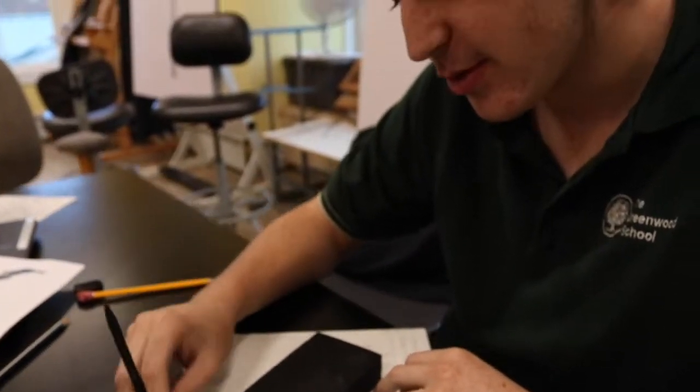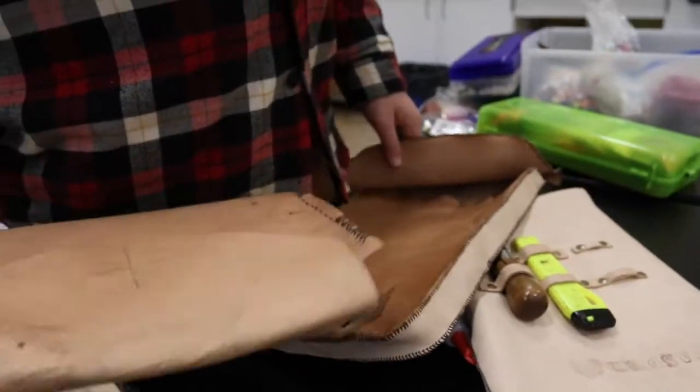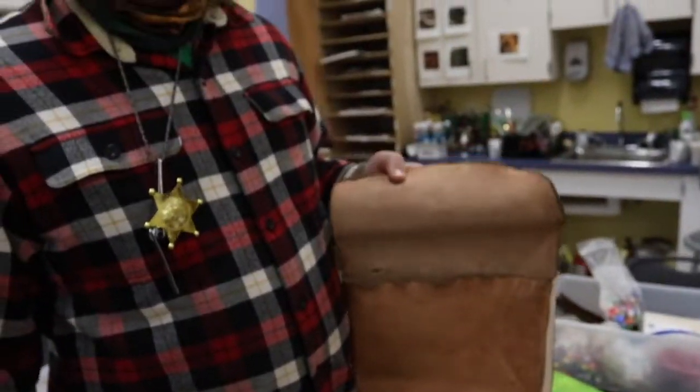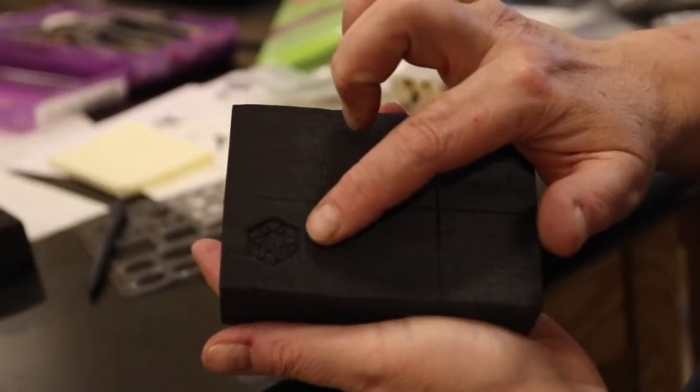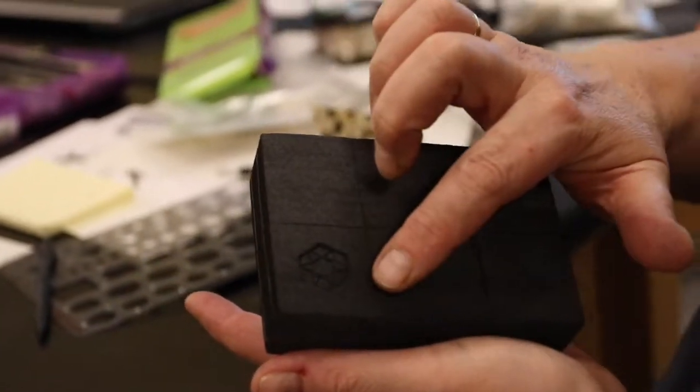We are making family heirlooms. Jasper is making a sterling silver button for a bag he's making. This is the design he carved into charcoal, and we'll melt silver directly into that.